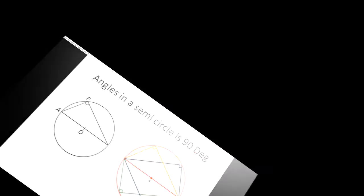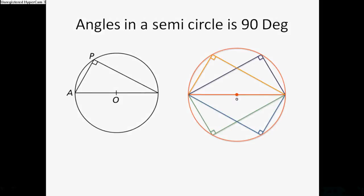That kind of proves it. Angles in a semicircle is 90 degrees. For example, this triangle, 90 degrees there. Two semicircles there. 90 degrees, 90 degrees, 90 degrees.